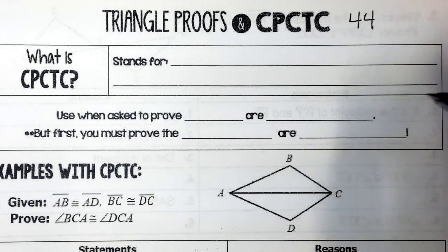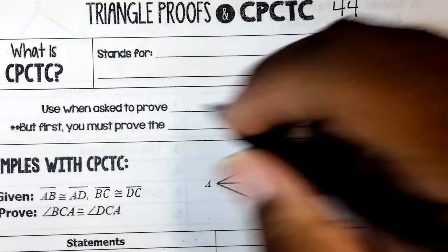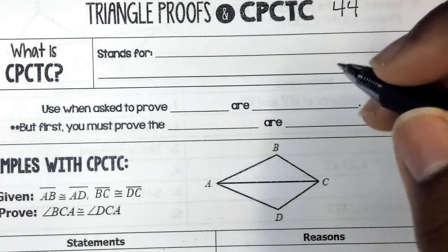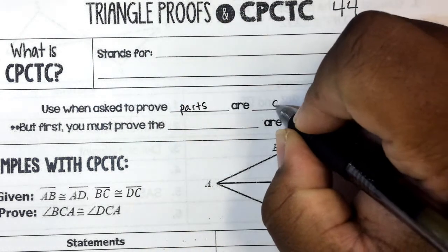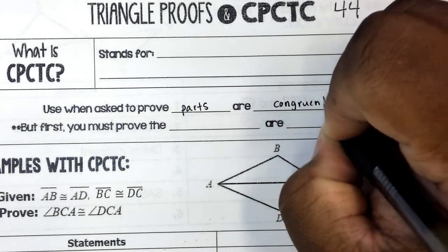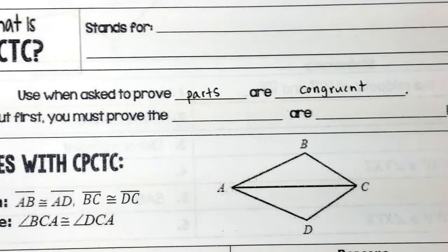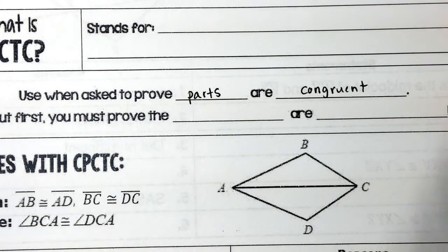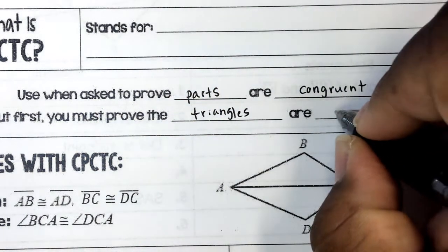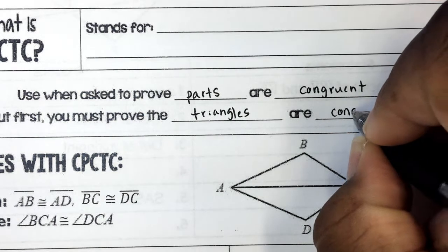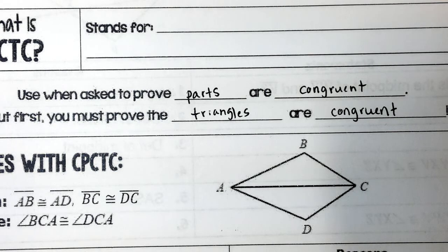CPCTC is an additional statement you make after proving triangles congruent, to prove that parts of triangles are congruent. We use CPCTC when asked to prove parts are congruent. But first, before you can prove parts are congruent, you must prove the triangles are congruent — that's what we did Monday and Tuesday. After that, we just do one additional piece of information to prove certain parts are congruent.